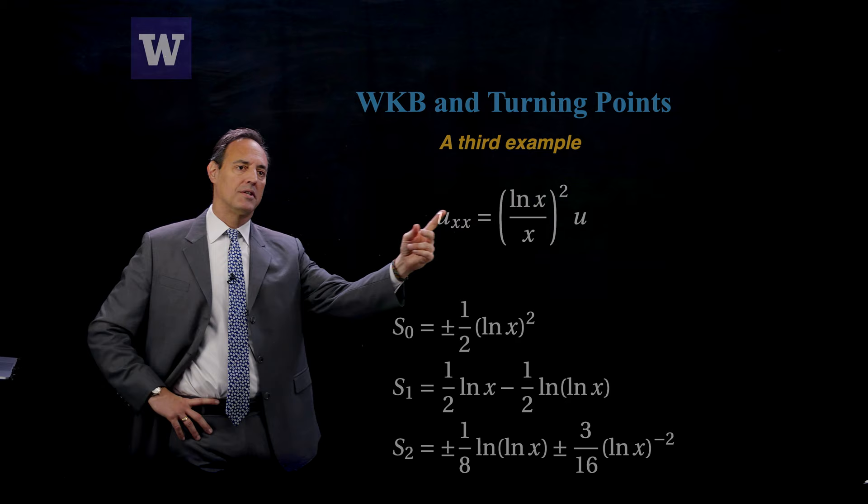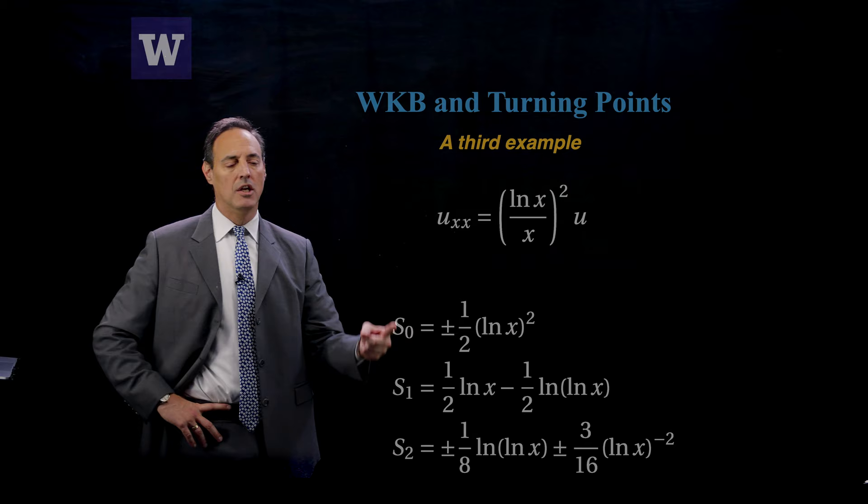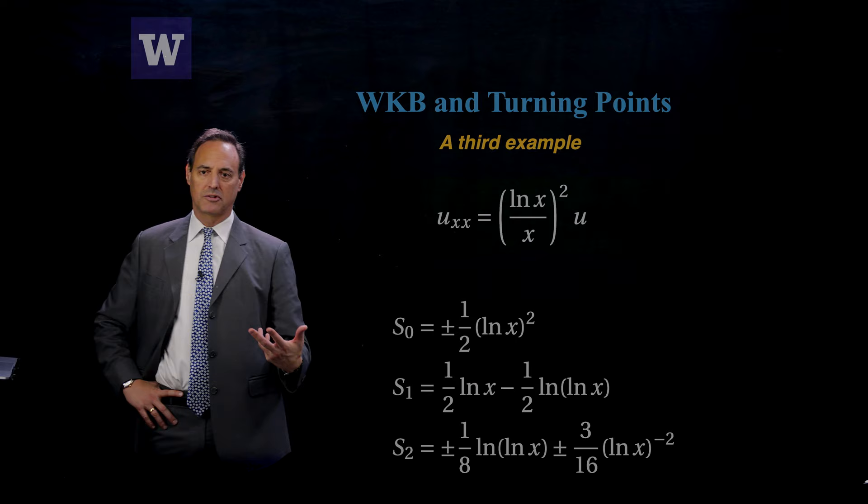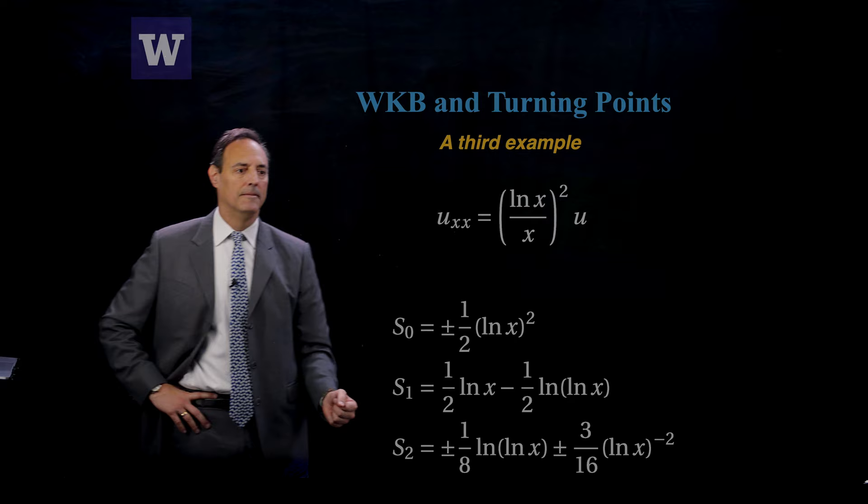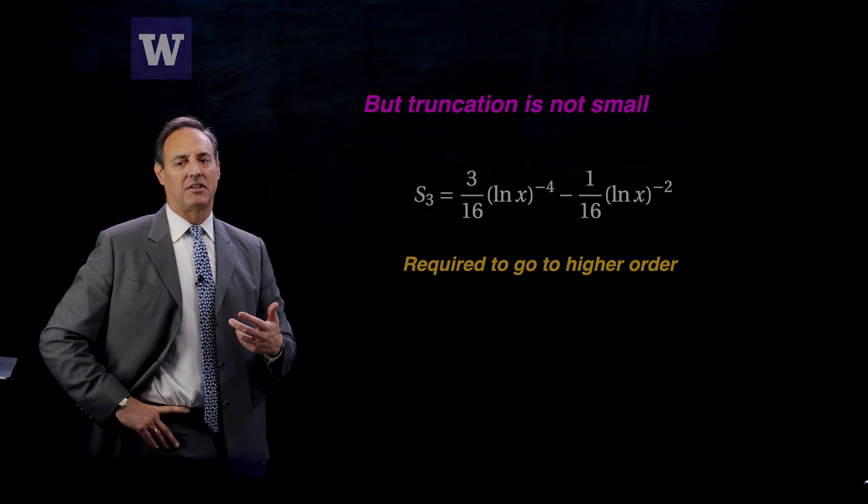So again, you can take this q of x, if epsilon is 1, throw it in. Here is your hierarchy of equations. We've just gone up to S2. No need to get S3 in this case. So I can put these all in, I can actually compute them. So I have S0, that's the iconal, S1 is given by here, transport, and S2 is this here. And you can see I can actually explicitly do these integrals. I just get these interesting functions like a log of a log, or here, a log to the minus 2 power, and so forth.